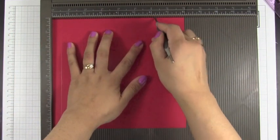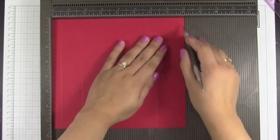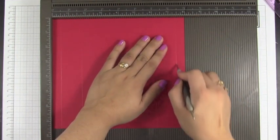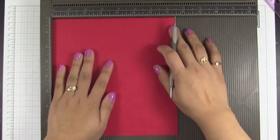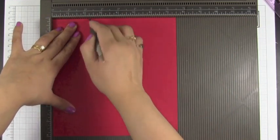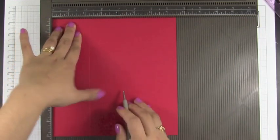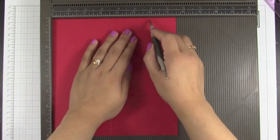Turn this around making your 7 and a half inch on top. We're going to score this at 2 and a quarter inch, 3 and a half, 5 and 3 quarters, and 7 inches.